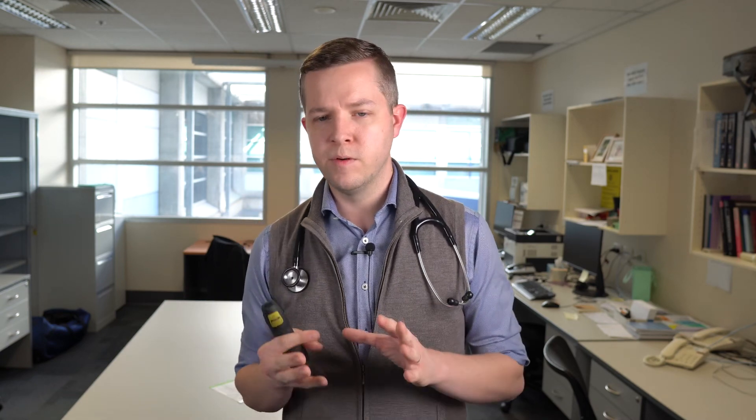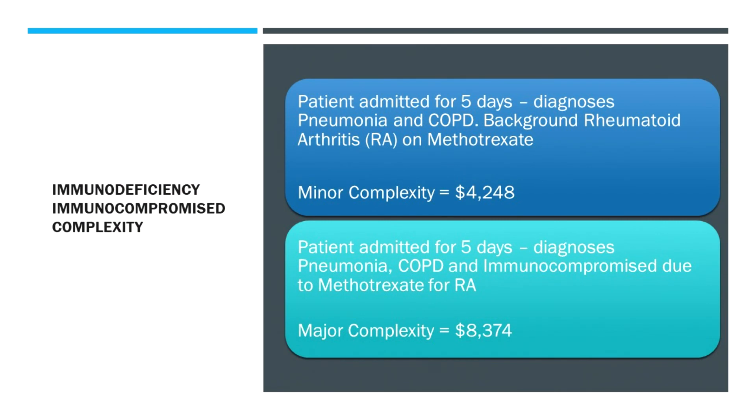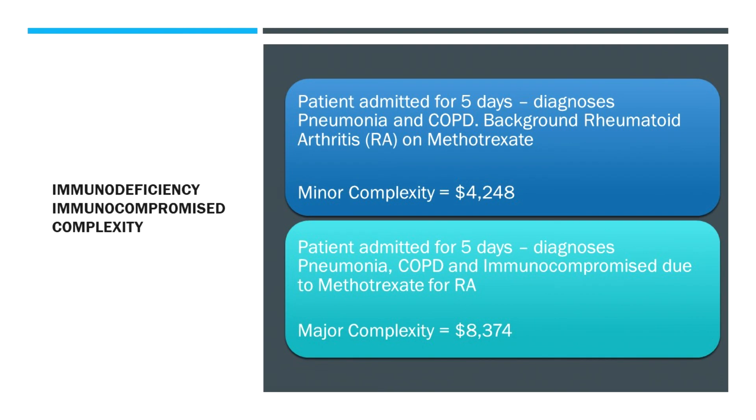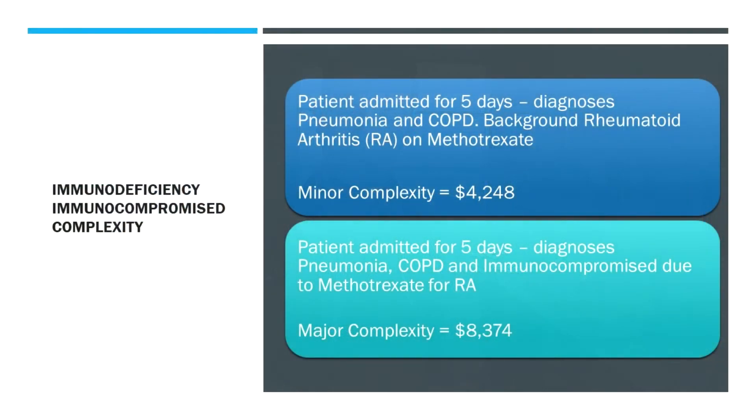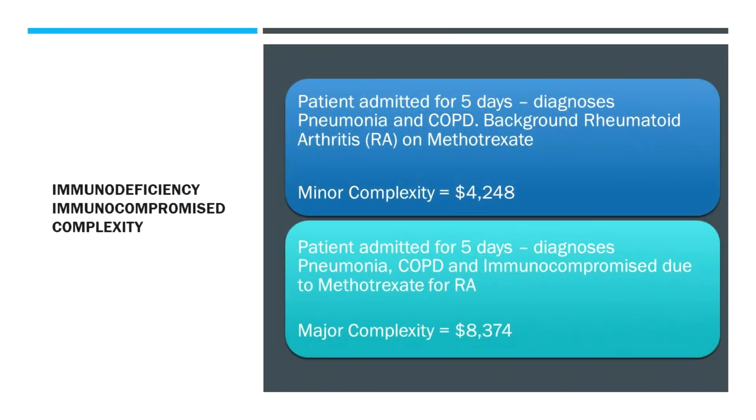Here's an example of how to apply that: a patient admitted for pneumonia as an exacerbation of COPD, with a background of rheumatoid arthritis and methotrexate treatment — just putting that in gives minor complexity of four thousand dollars. If we then specify that the methotrexate given for treatment of RA is immunosuppressing the patient, resulting in an immunocompromised status that is contributing to the complexity of that pneumonia, that improves complexity to major at eight thousand dollars — almost doubling the income. That's a big change for a small number of words added.